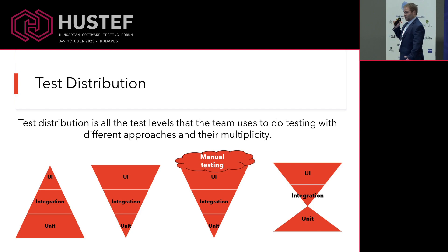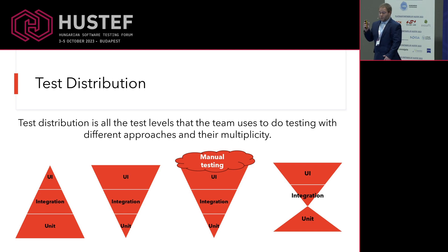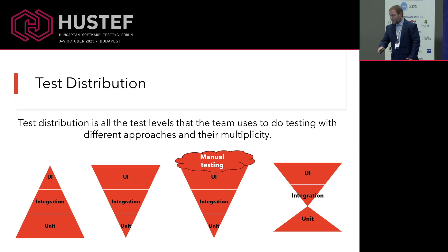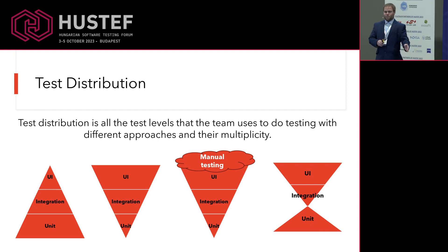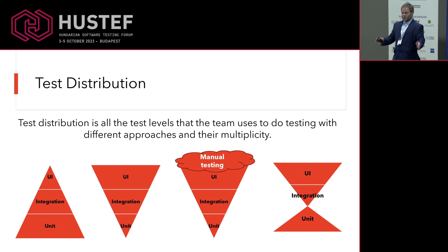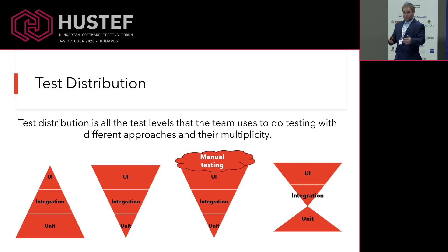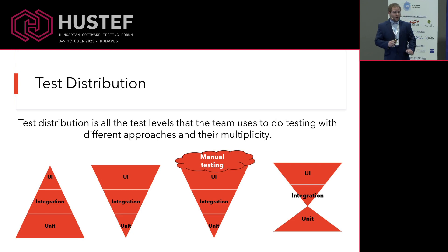And the main importance is the multiplicity for the different test levels. If we look at the different test distributions, we have quite many. I just show you four at the moment, but believe me, there are much more. On the left side, we have the traditional testing pyramid, where we are starting with a lot of unit testing, then moving on to integration with a smaller amount, and at the top we have the UI testing in a small number.